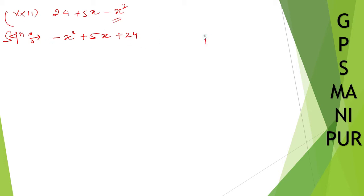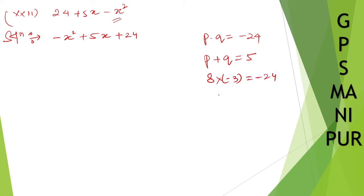Now, you multiply these two numbers: P into Q must be equal to 24 into minus 1, it will be minus 24. And if you add those two numbers, P plus Q, you will get 5. Any two numbers — if you multiply you get minus 24, and if you add you get 5 — that is 8 and minus 3: 8 times minus 3 is minus 24, and 8 minus 3 is 5. So: minus x squared plus (8 minus 3)x plus 24.